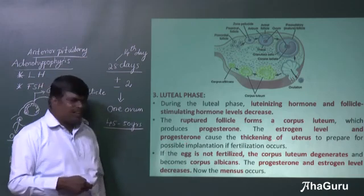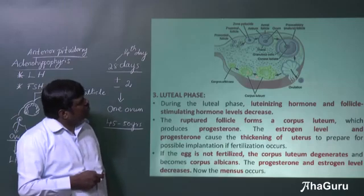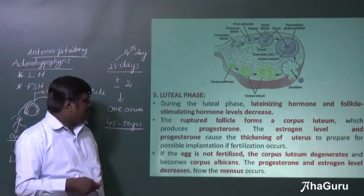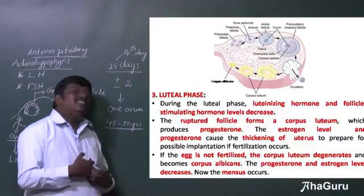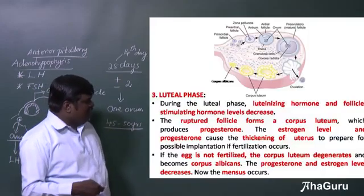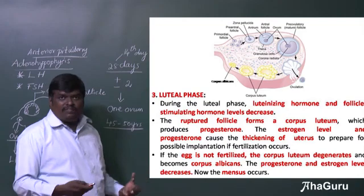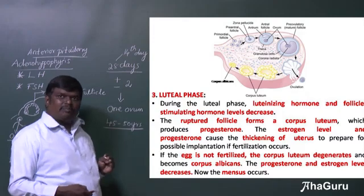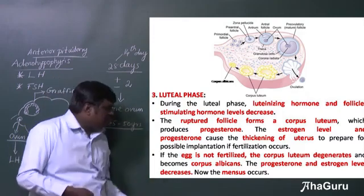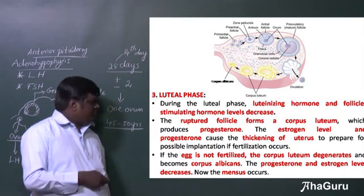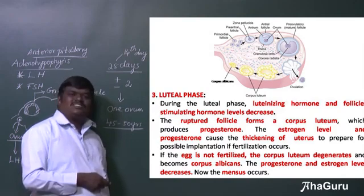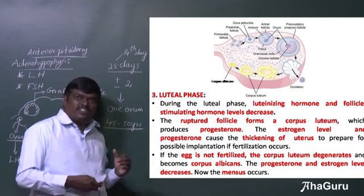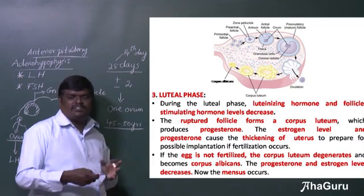If the egg is not fertilized, the corpus luteum develops into a scar called corpus albicans, which then disintegrates. Once corpus albicans forms, estrogen and progesterone levels completely decrease. When they decrease, menses starts again, and the follicular phase begins once more. These are the different stages or phases of the menstrual cycle.